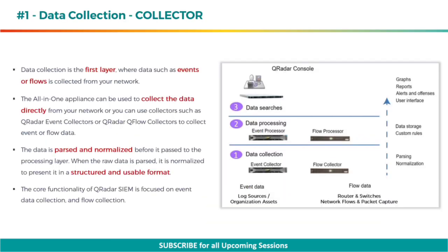Data collection is the first layer, where data such as events or flows is collected from your network. The all-in-one appliance can be used to collect the data directly from your network, or you can use collectors such as QRadar event collectors or QRadar queue flow collectors to collect event or flow data. The data is parsed and normalized before it is passed to the processing layer. When the raw data is parsed, it is normalized to present it in a structured and usable format. The core functionality of QRadar SIEM is focused on event data collection and flow collection.